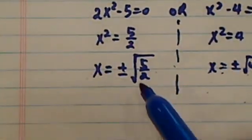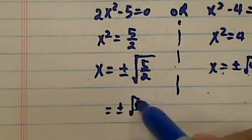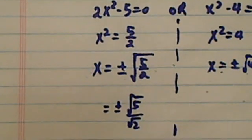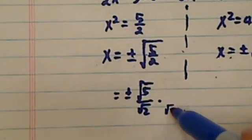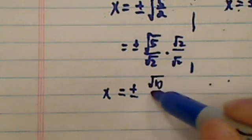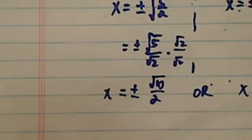And then let's simplify it a little bit over here. When we have a radical division, we can actually split it up. If we rationalize it a little bit by multiplying radical 2 on top and bottom, we have that x is equal to, let's move up a little bit for us, plus minus radical 10 over 2. Or, let's copy this one, x equal to plus minus 2.